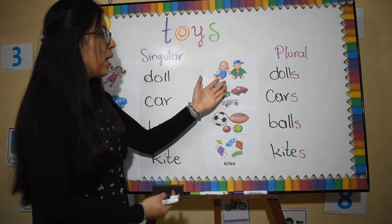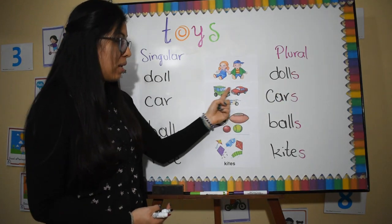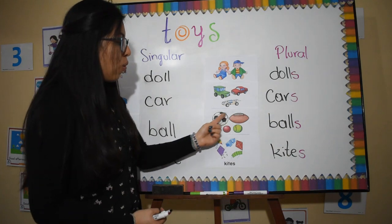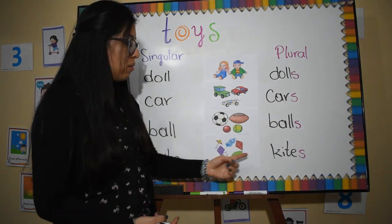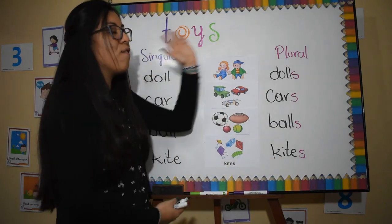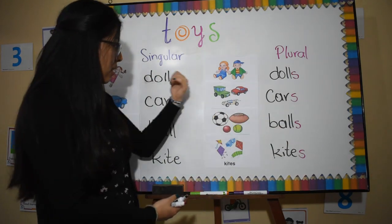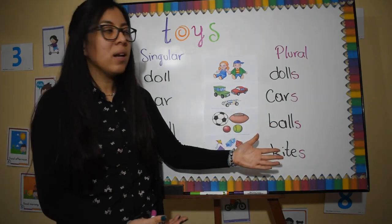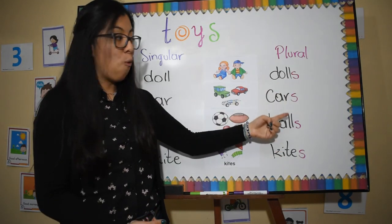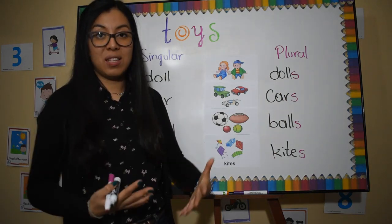Como acá: tengo dos muñecas, entonces yo digo dolls. Tengo tres carros, digo cars. Tengo cuatro pelotas, digo balls. O tengo cinco cometas — kites. ¿Qué es lo que le voy a agregar a mis palabras en singular cuando hablo en plural? La S. Al final simplemente le voy a agregar una S para que me quede en plural y así hablar de diferentes cosas.